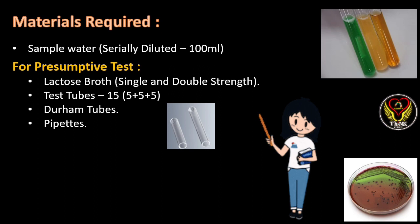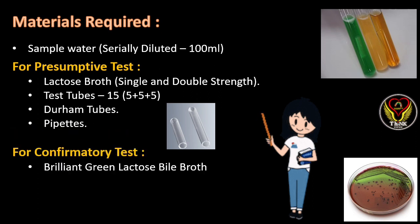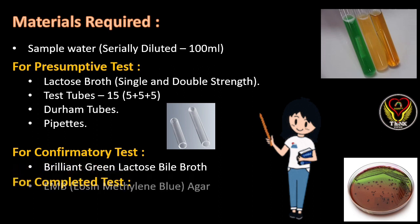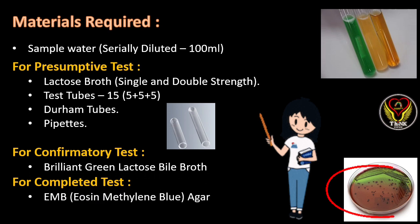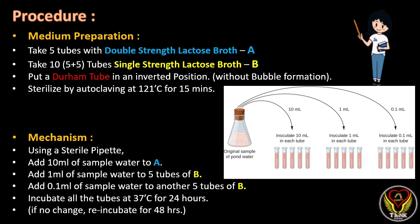We will also require pipettes for adding the required volumes of water. The media used for the confirmatory test is Brilliant Green Bile Lactose broth, as shown in the picture — the green color is the normal broth, and after a positive result a color change is observed. For the completed test, EMB agar, that is Eosin Methylene Blue agar, is used.